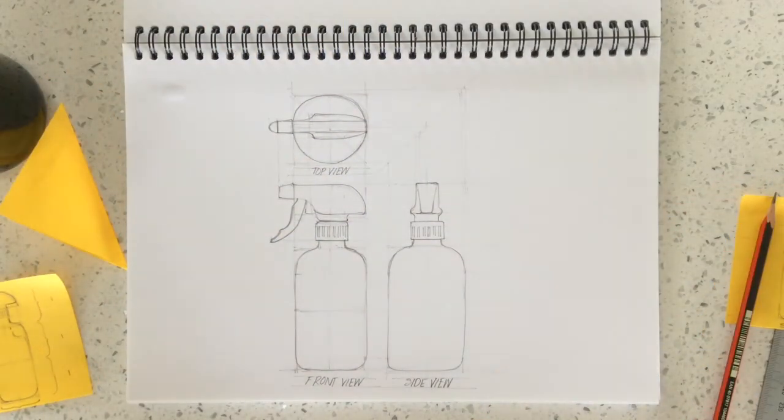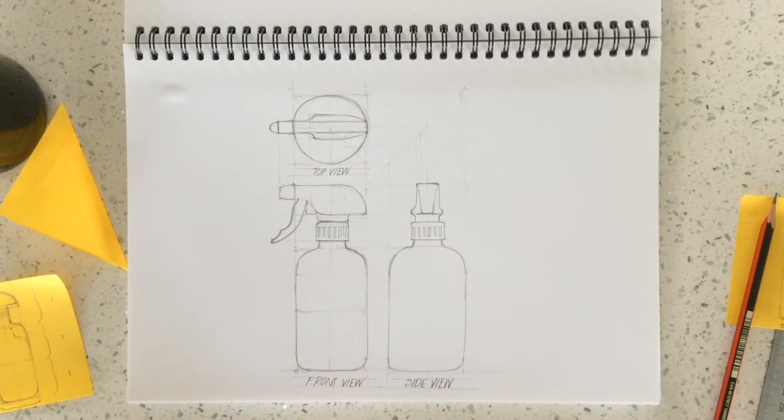And that is the final orthographic projection, three views in third angle orthographic of a spray bottle. Be aware of your projection and your proportions as you are constructing an orthographic projection of a real life object.